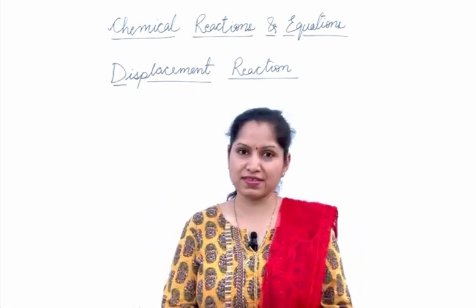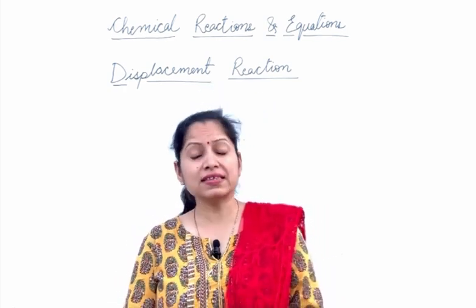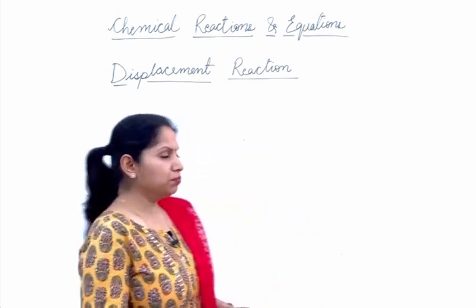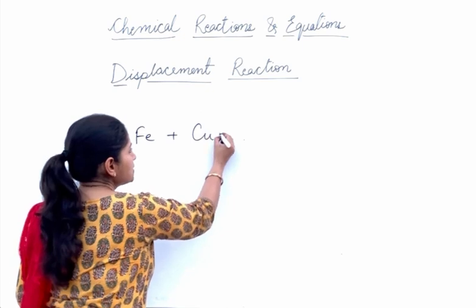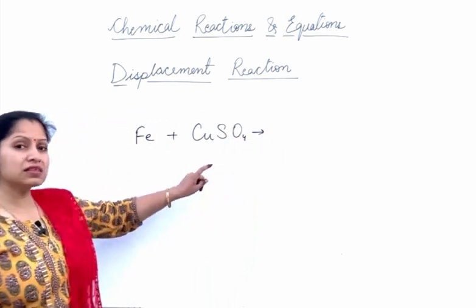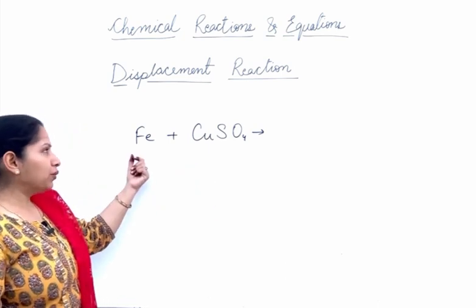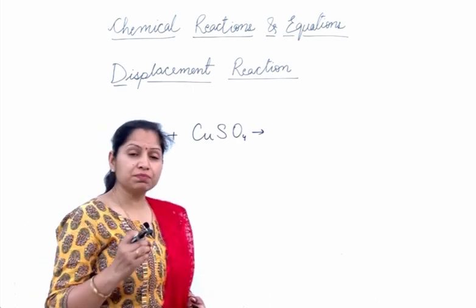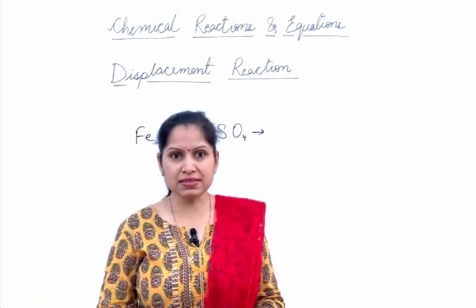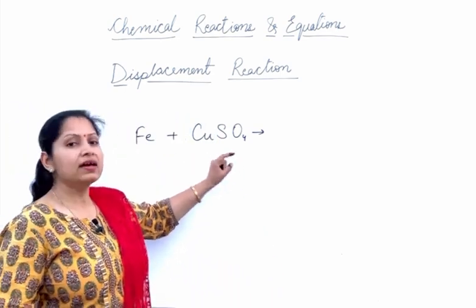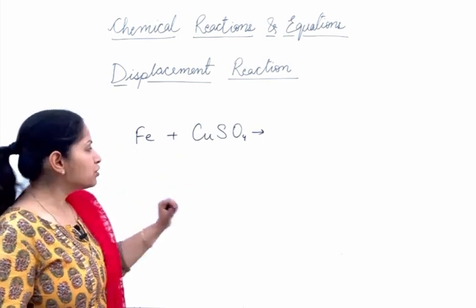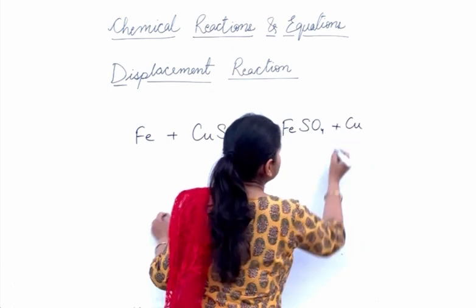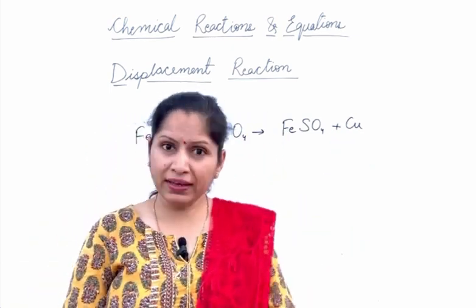Starting with displacement reactions — when a more reactive element displaces a less reactive element from its salt solution, the reaction is known as a displacement reaction. For example, if we put iron nails in copper sulfate solution, we find that the copper sulfate solution is blue in color. When we add iron nails to it, the blue color of the solution fades away and copper gets deposited over the iron nails. This happens because iron is more reactive than copper, and so iron displaces copper from its salt solution.